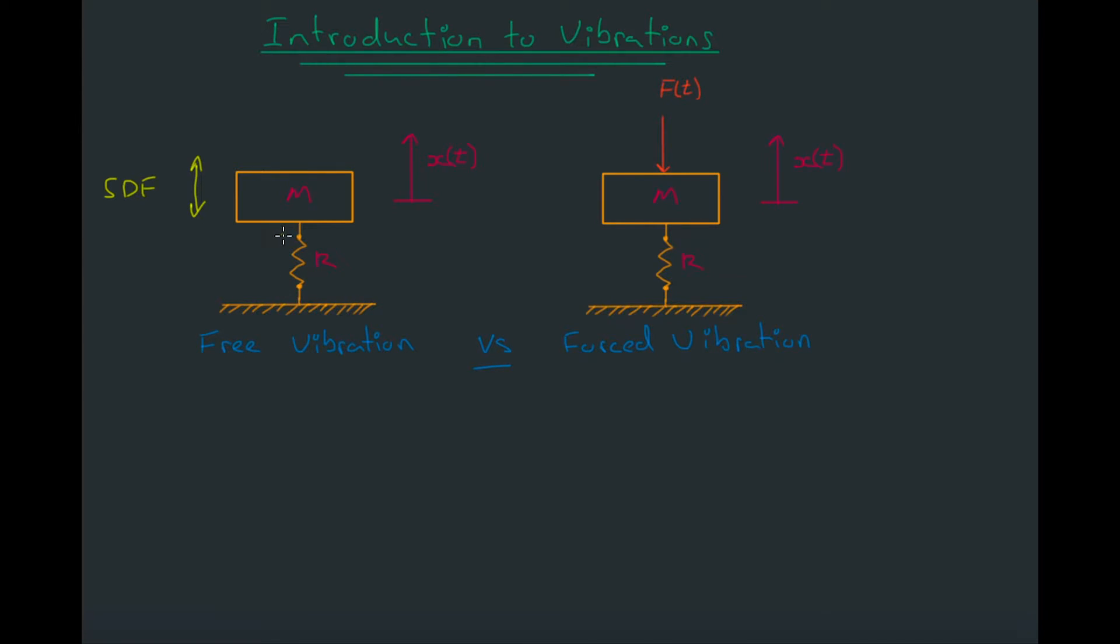What happens is free vibration occurs when we excite the mass and then let it vibrate itself. So you could formally describe free vibration as: free vibration occurs when the system is allowed to oscillate in absence of external forces.